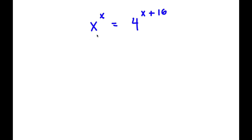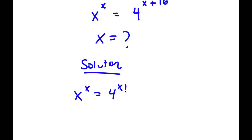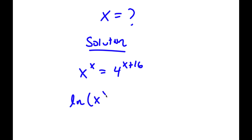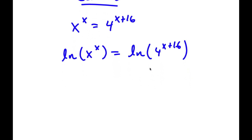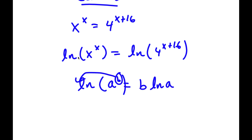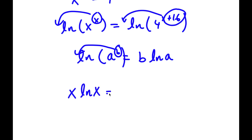In this problem, I have x to the power of x is equal to 4 to the power of x plus 16. To solve this, I want to first find the value of x. Starting with x to the power of x equals 4 to the power of x plus 16, I take the ln on both sides: ln x to the power of x equals ln 4 to the power of x plus 16. Since I can move the exponent to the front, x times ln x is equal to x plus 16 times ln 4.